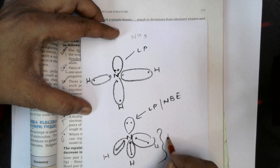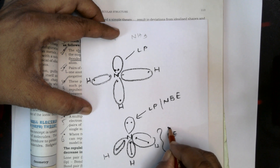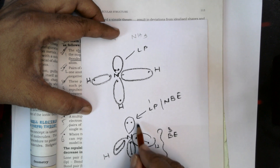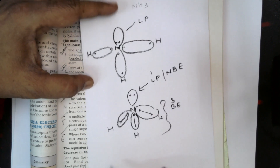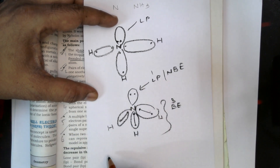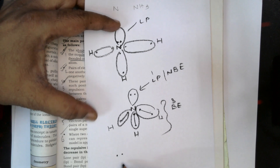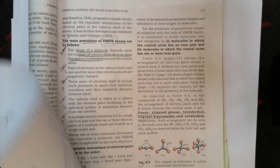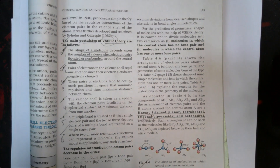Your pair of electrons can be present as a lone pair. Now, in the case of the water molecule, there are two lone pairs of electrons — let me show you.